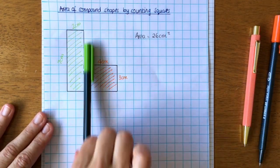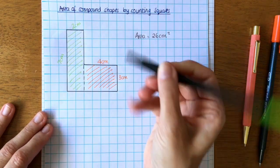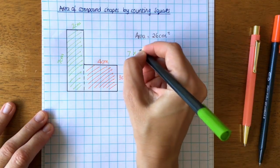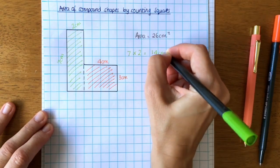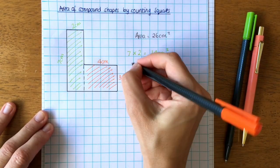So if I think about the green part, if I was working out the area of this part, it's seven by two. So seven times two, which is 14 centimeters squared. And if I'm working out the area of this one, it'd be four times three. So four times three is 12 centimeters squared.